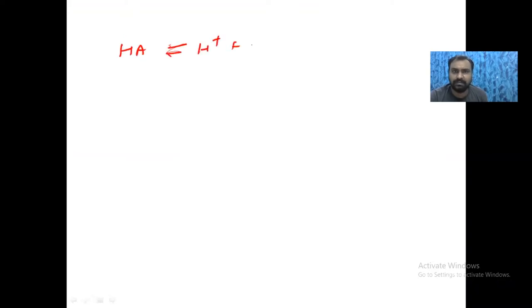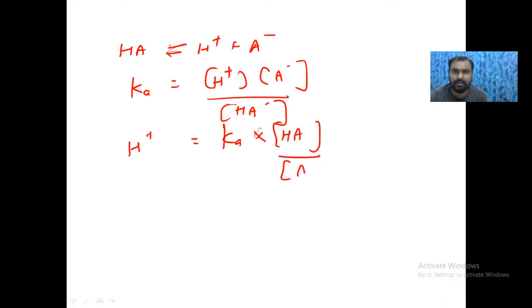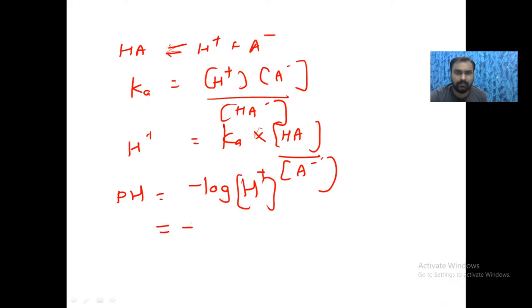So if an acid ionizes, it is converted to H⁺ and A⁻. The ionic constant will be hydrogen ion concentration times A⁻ upon the acid concentration. If you want to express hydrogen ion concentration, it is Ka times HA upon A⁻. We know pH is equal to the negative logarithm of hydrogen ion concentration, so pH equals minus log of Ka times acid upon base.